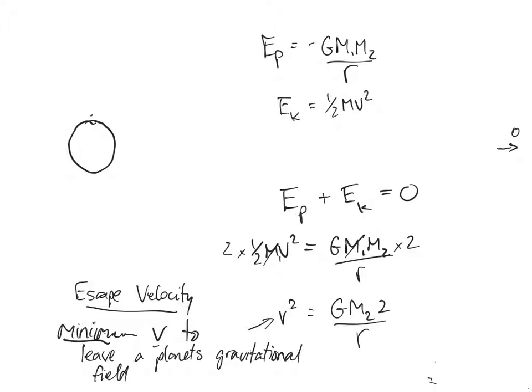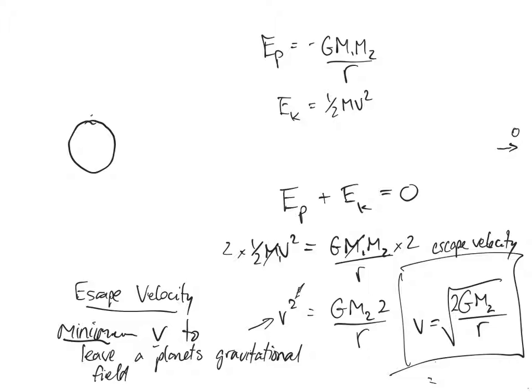We can get rid of this V² and we get V equals square root GM₂ times 2 divided by R. Now this is our gravitational escape velocity. And for Earth it's approximately 11.2, I think it's pretty much exactly, kilometers per second. So that's escape velocity, the minimum velocity required to leave a planet's gravitational field.